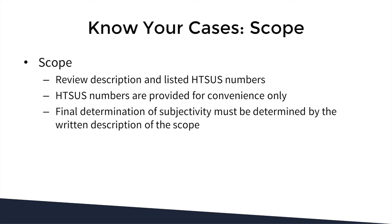Next, we're going to get into knowing your cases. One of the first things you need to know when looking at any case is the scope, which defines the products that fall under the anti-dumping or countervailing duty order. Look at the description as well as the listed HTSUS numbers. The important piece when looking at those HTS numbers is to remember that they are only provided for convenience. To truly understand if your goods are subject to the order, you need to be reading the description — the final determination of subjectivity must be determined by the written description in the scope, not just the HTS code.